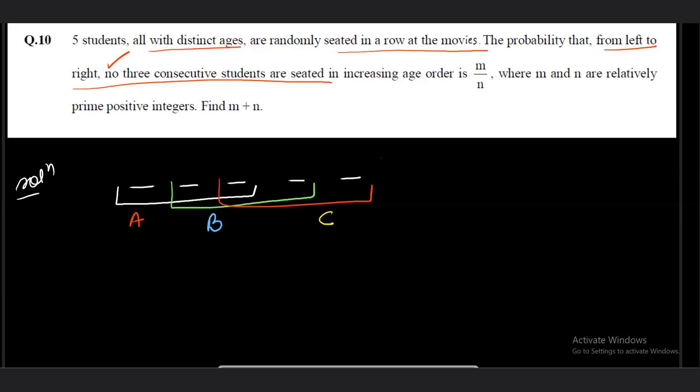We have to ensure that 3 students are NOT in increasing age order. Suppose we have 3 students Ram, Shyam, Ghanshyam with ages 3, 4, 5. You have to seat Ram, Shyam, Ghanshyam from left to right such that they are NOT in increasing age order. For example, Ram-Ghanshyam is fine, or seating them as 4, 5, 3 is fine, or 5, 4, 3 is also fine because that is decreasing age order — that is also allowed. They just must not be in increasing age order. This is what the question wants. To solve this, we will use the Principle of Inclusion-Exclusion.